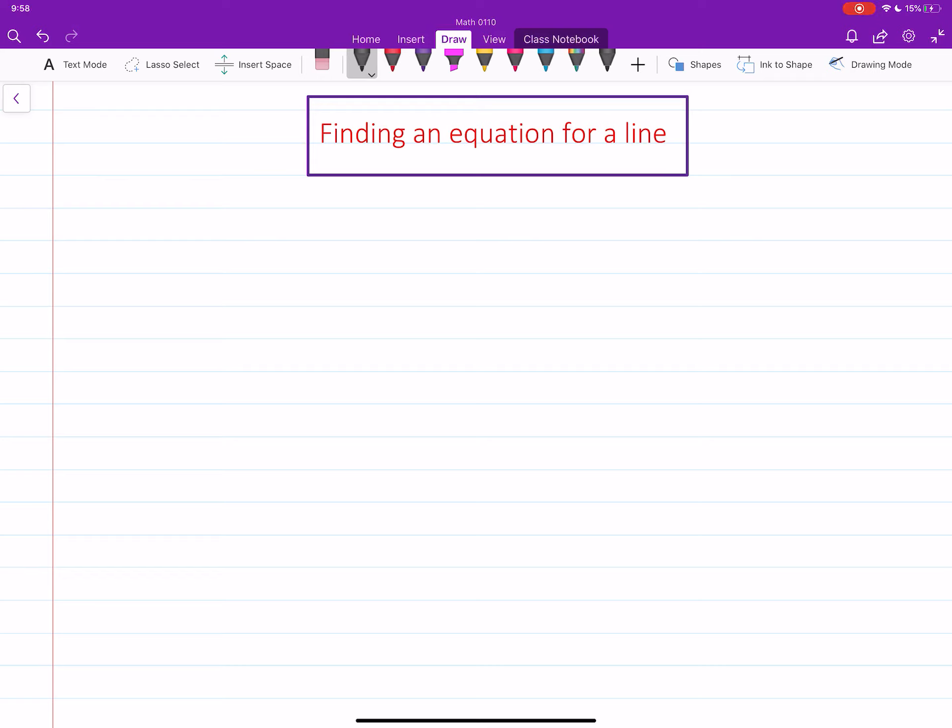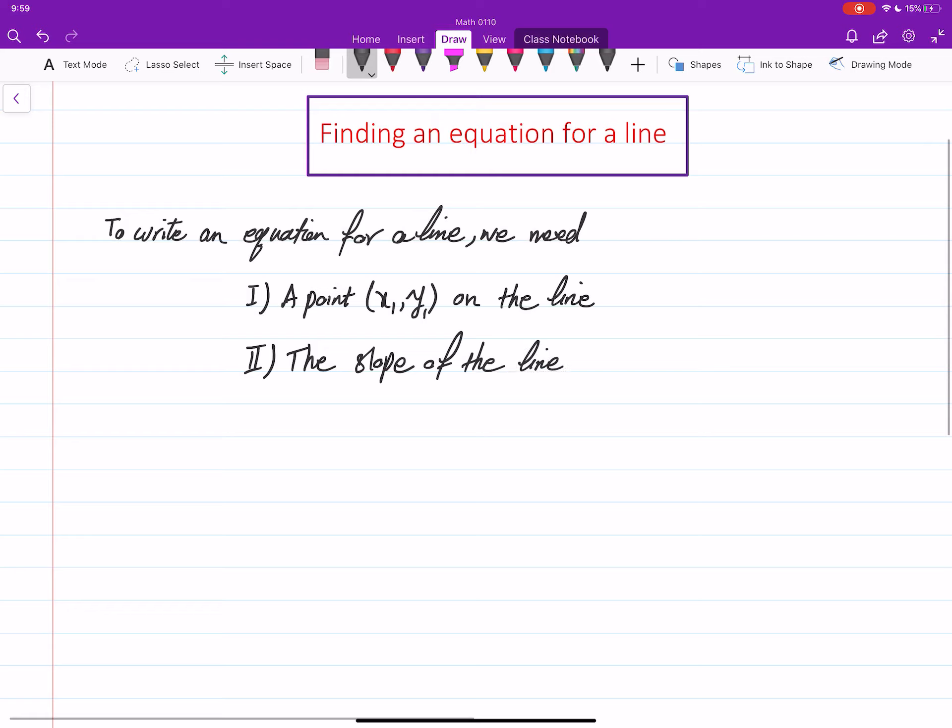In this video we will learn how to write an equation for a given line. Everything starts with this point that to write an equation for a line, we need two pieces of information. One is a point (x₁, y₁) on the line, and the slope of the line, where the slope is denoted by m, a number, and the point.